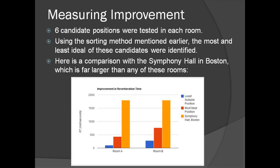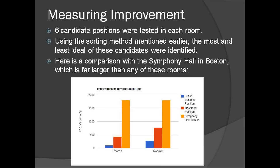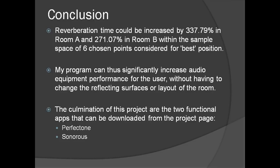Using this, the most ideal and the least suitable of the six points tested in each room were identified. Even amongst the candidates for best position, reverberation time could be increased by 250 to 350%. Thus, my program can significantly increase audio performance without having to change the reflecting surfaces or the layout of the room.